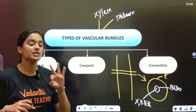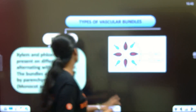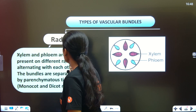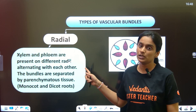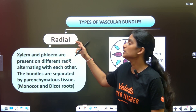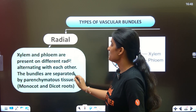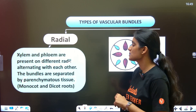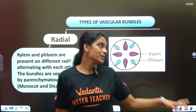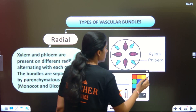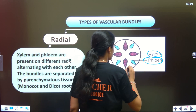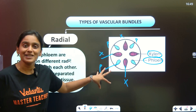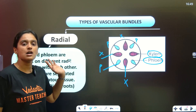There are 3 types based on how Xylem and Phloem are arranged: Radial, Conjoint, and Concentric. The first type is Radial, where Xylem and Phloem are on different radii. The bundles are separated by parenchyma tissue. This occurs in monocot and dicot roots. You can see alternating patches - xylem, phloem, xylem, phloem - on different radii. This is called a Radial Vascular Bundle.